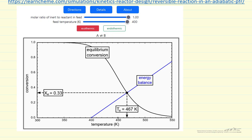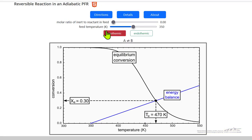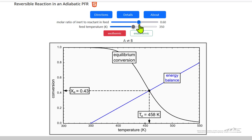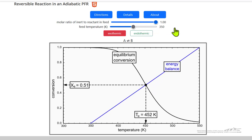And so let's look at this simulation. Right now we're looking at an exothermic reaction with no inert, and as I add more inert, you can see equilibrium conversion increasing, equilibrium temperature decreasing.